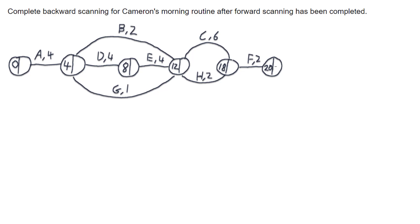Backwards scanning starts at when the project finishes and works its way backwards through the project to work out when is the latest we can start all of these activities. Because we're starting when the project finishes, we put the finished time at the start of our backwards scanning — in the finished node on the right hand side. Then we take this value and subtract off the activity time to give the latest start time. So 20 take 2 gives me 18, meaning the latest I can start F is at the 18th minute, which makes sense — it takes 2 minutes, finishing the project at 20 minutes.